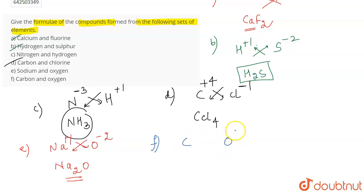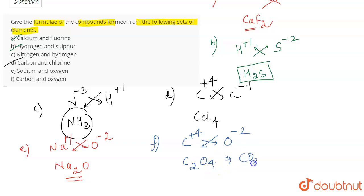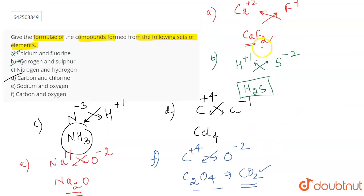For part F, you have carbon and oxygen. Oxygen has a tendency to gain two electrons and has a charge of -2. Carbon has a tendency to lose four electrons. Interchanging the valencies gives C₂O₄, which can be reduced by taking 2 as common to give CO₂. The arrows are interchanged as we are working in the downward direction.